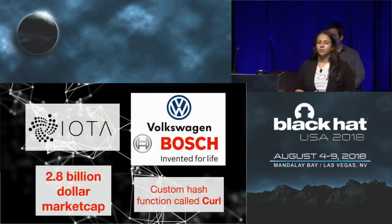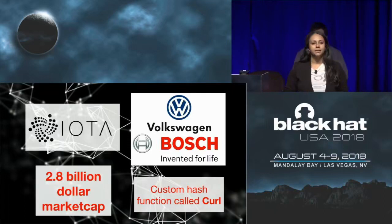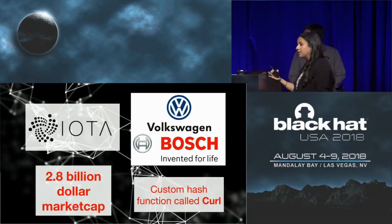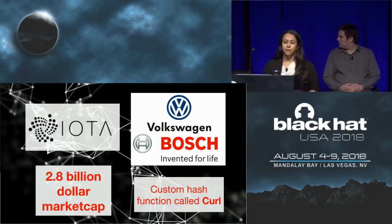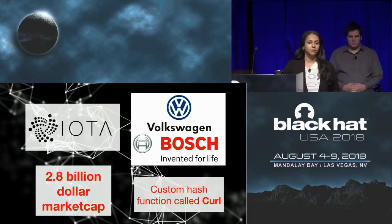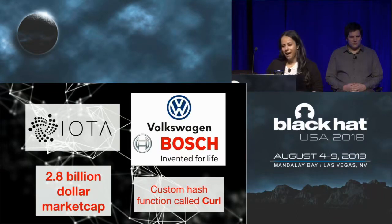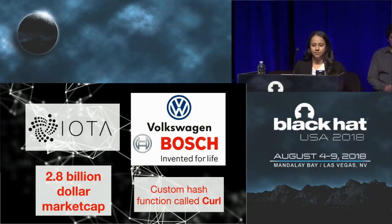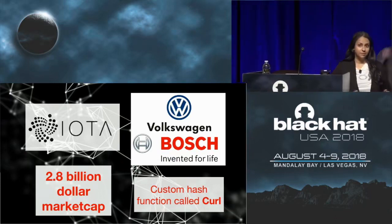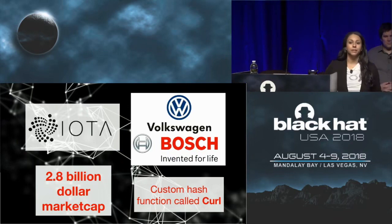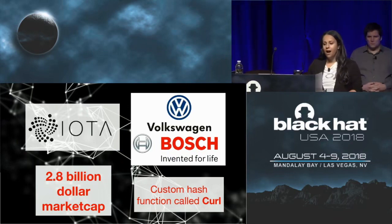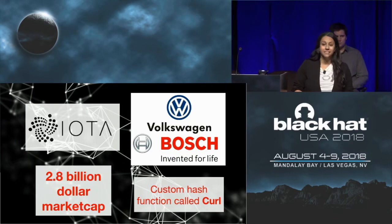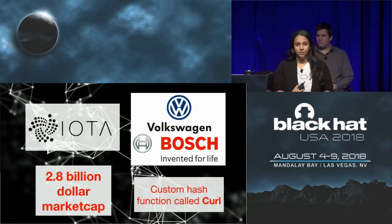So what is IOTA? You might not have heard of it. It's actually a top 10 cryptocurrency. As of a few days ago, it had a valuation of about $2.8 billion, but there's been a little bit of a dip in cryptocurrency, so it's a little lower right now. They have a lot of partnerships with large companies. For example, Bosch has purchased, in their own words, a significant number of IOTA tokens. Volkswagen is releasing an IOTA-based product in 2019.